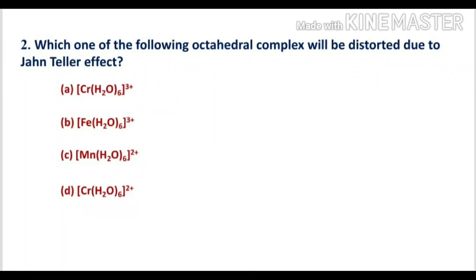For option B, the ion is in +3 oxidation state with d5 configuration — all T2g and Eg orbitals are symmetrically filled, so Jahn-Teller distortion is not expected here either. For option C, manganese is in +2 oxidation state with d5 configuration, showing the same trend — no Jahn-Teller distortion expected.